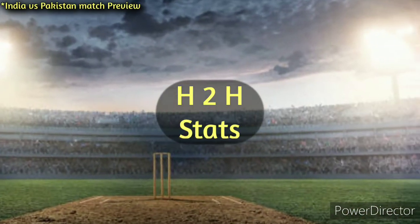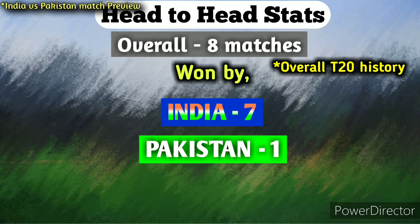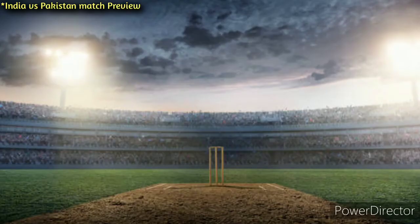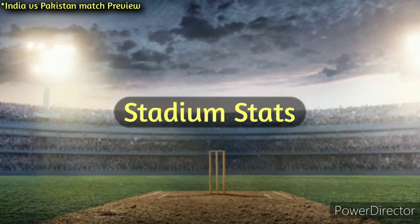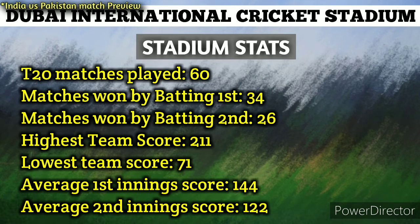Head-to-head stats: Overall, a total of eight T20 international matches have been played between India and Pakistan, out of which India have won seven matches and Pakistan have won only one. At Dubai International Cricket Stadium, a total of 60 T20 international matches have been played, with the batting-first team winning 34 and the batting-second team winning 26. The highest team score is 211 runs and the lowest is 71 runs. The average first-innings score is 144 runs and the average second-innings score is 122 runs.